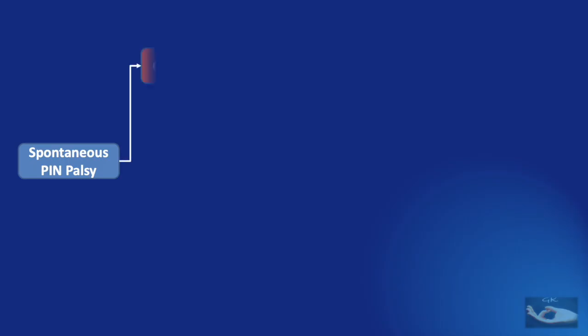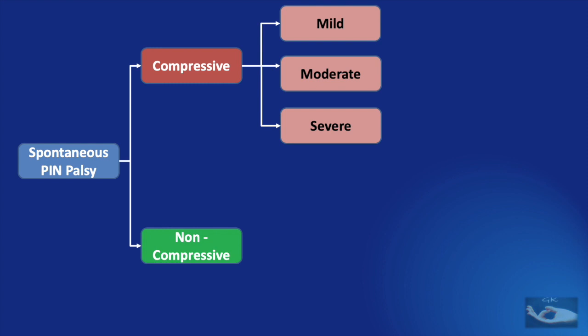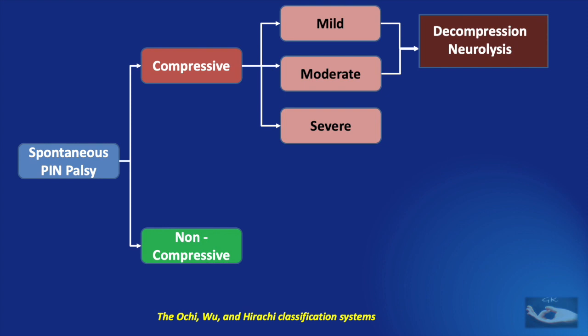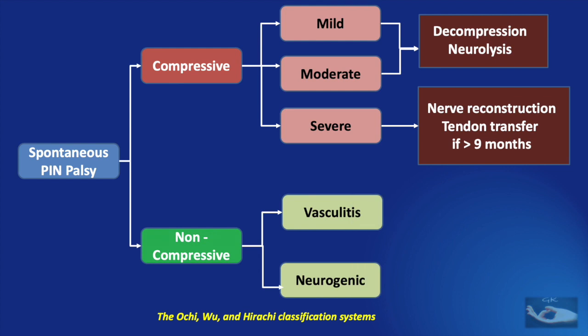Let us now consider the management protocol for a posterior interosseous nerve palsy caused by entrapment neuropathy. This spontaneous posterior interosseous nerve palsy could be due to compressive or non-compressive etiology. The symptoms due to compressive neuropathy could be mild, moderate, or severe according to the Ochi, Wu, and Hirachi classification systems. If symptoms are mild or moderate, decompression neurolysis needs to be done. If symptoms are severe, exploration and nerve reconstruction are required, and a tendon transfer can be planned if the duration of compression has been more than 9 months. If the cause is non-compressive, such as vasculitis or neurogenic causes, non-operative management should be instituted.